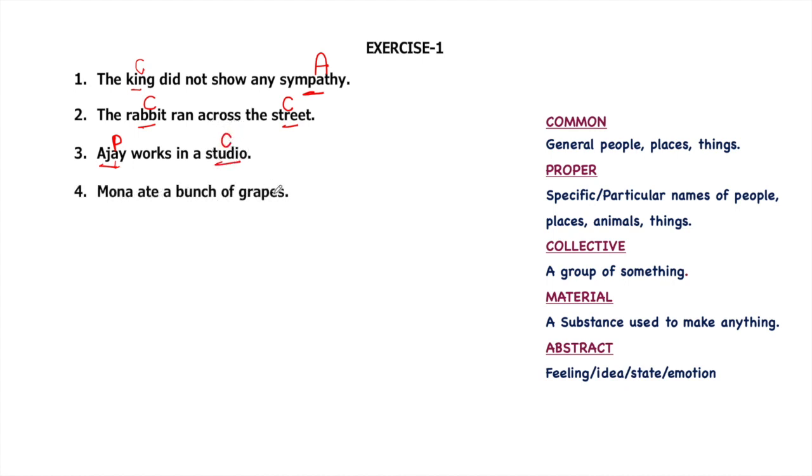Monah ate a bunch of grapes. Monah is a person. One more quality of proper noun is that proper noun always begins with capital letter, so it will be proper noun. Bunch is called a group of grapes, it's a collective noun. But the word grapes will be common noun. The warm water melted the snow. The word water is common noun. It is found everywhere. Water can be of many types. And snow, in the same way, it's a common noun.